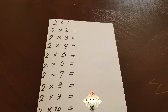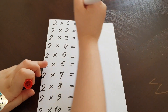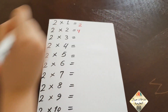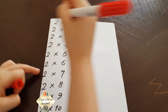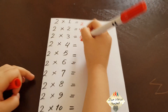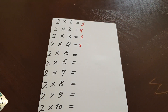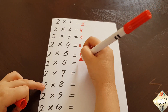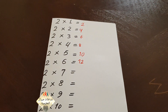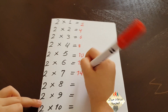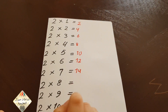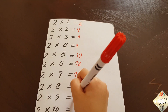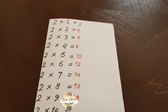Two times one equals two. Two times two equals four. Two times three equals six. Two times four equals eight. Two times five equals ten. Two times six equals twelve. Two times seven equals fourteen. Two times eight equals sixteen. Two times nine equals eighteen. Two times ten equals twenty.